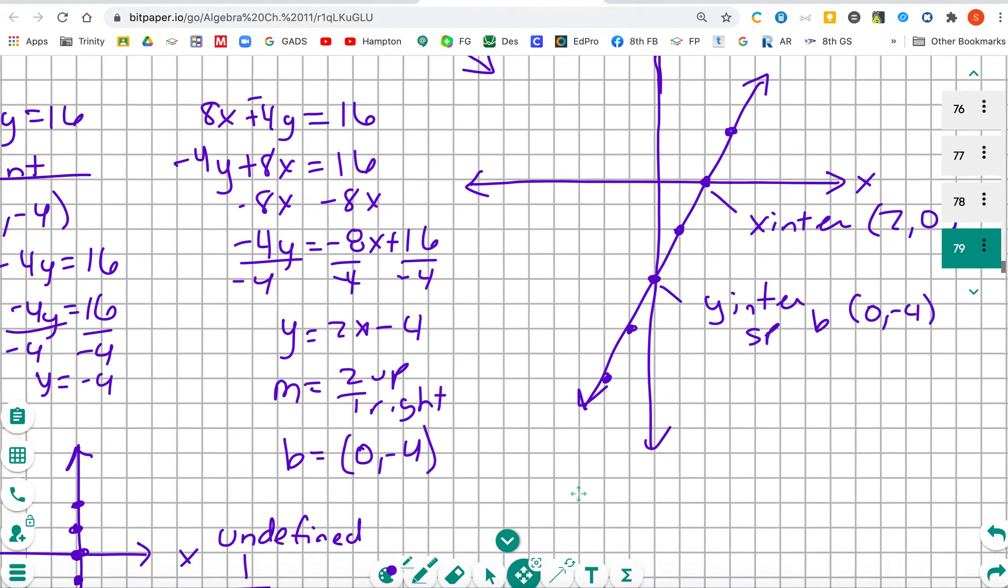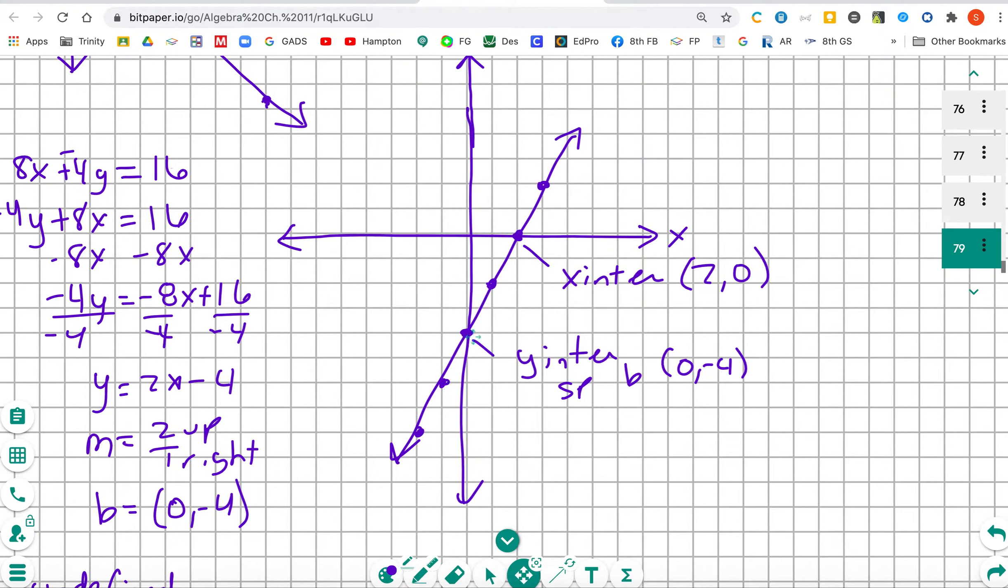So now we're going to come over here and graph. We're going to start at (0, -4). We're going to go up 2 to the right 1, up 2 to the right 1. We're touching the x-intercept, so we're going to go one more time. Up 2 to the right 1.